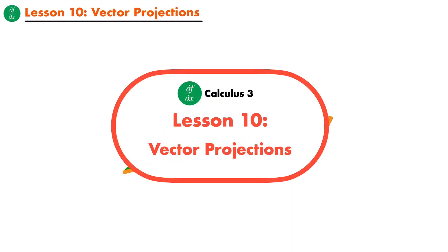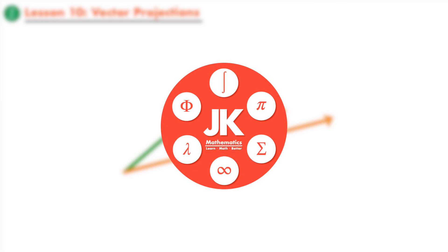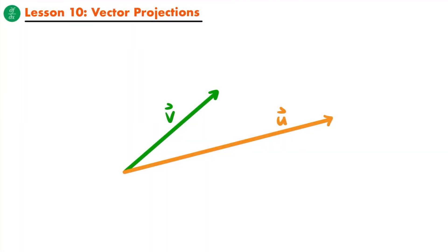Welcome back. Let's learn about vector projections. Previously you have seen how we can add two vectors together to create a new resultant vector. However, there are going to be some applications of vectors, such as in physics, where we will be required to reverse this process. And I'm not talking about vector subtraction, but rather breaking up or decomposing a vector into the sum of two vector components.